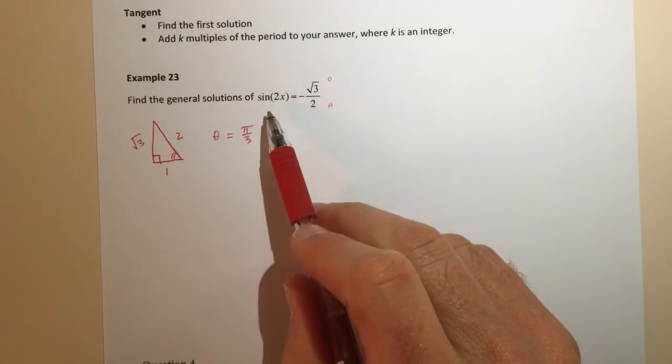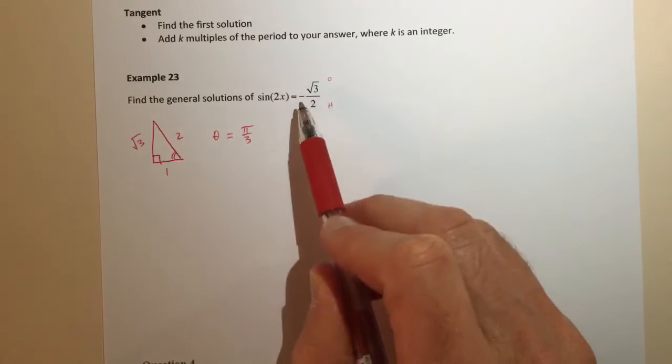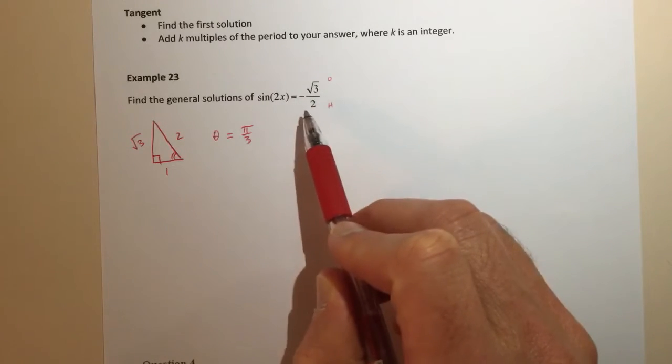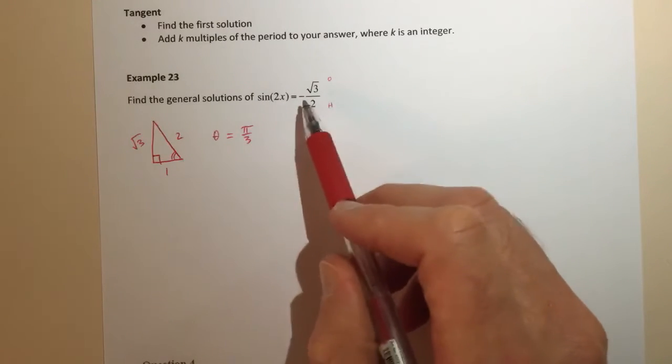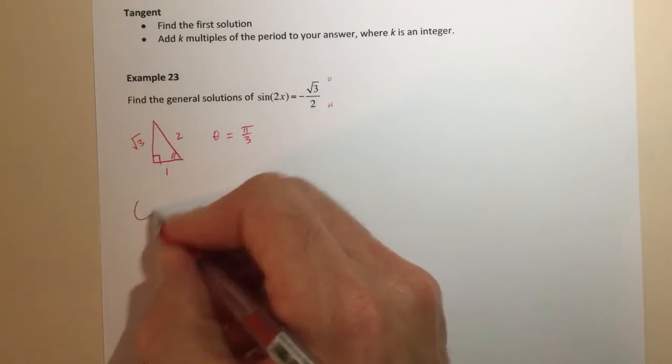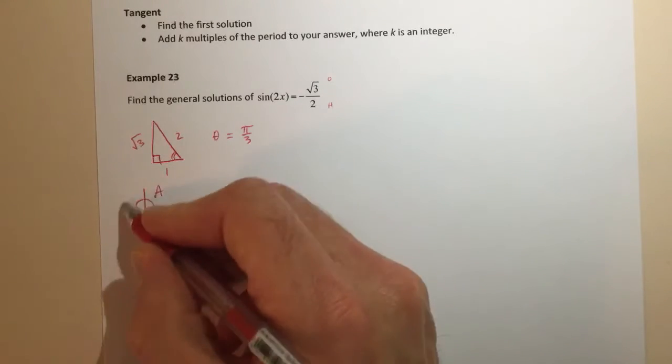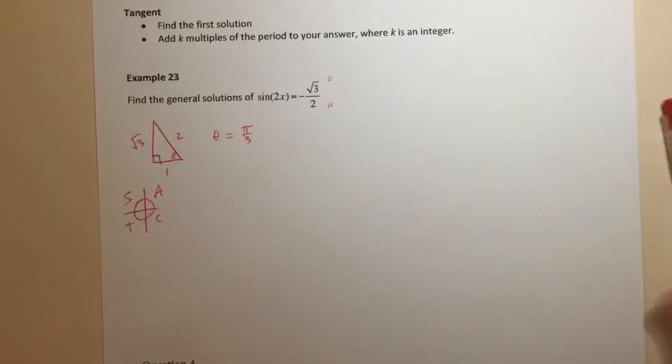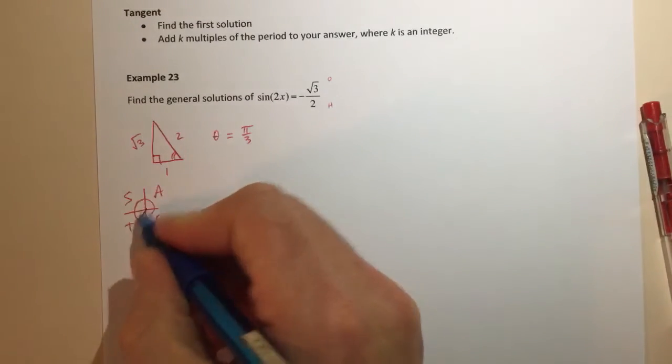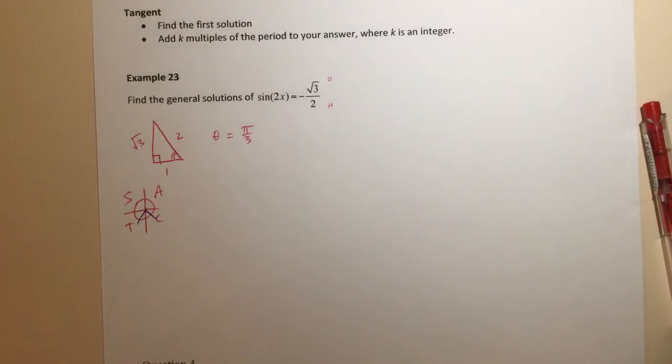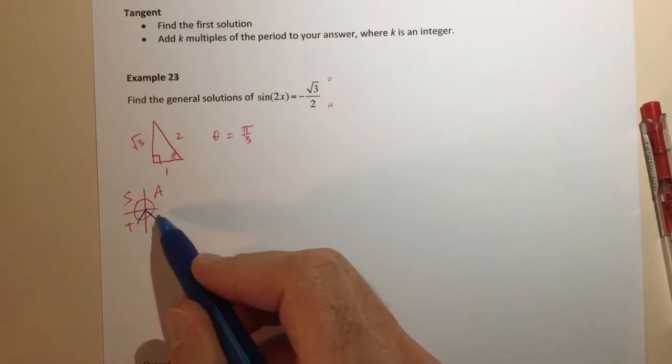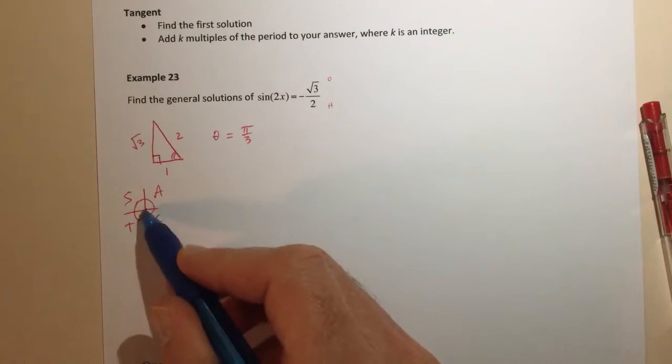And then I'm thinking okay well in this equation it's sine of an angle gives me a negative value so I need to think about what quadrants sine is negative in and sine is negative in the third and fourth quadrants. All right so I'm going to get an angle from using the third quadrant and an angle from using the fourth quadrant, sorry a solution from using the third and then the solution from using the fourth.